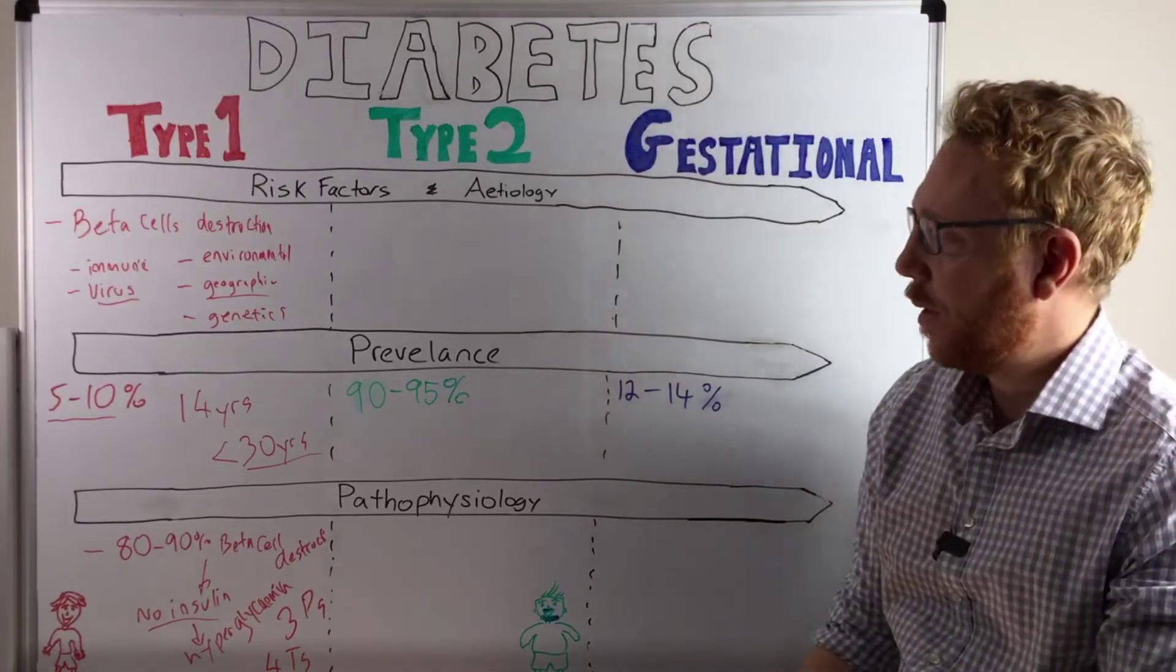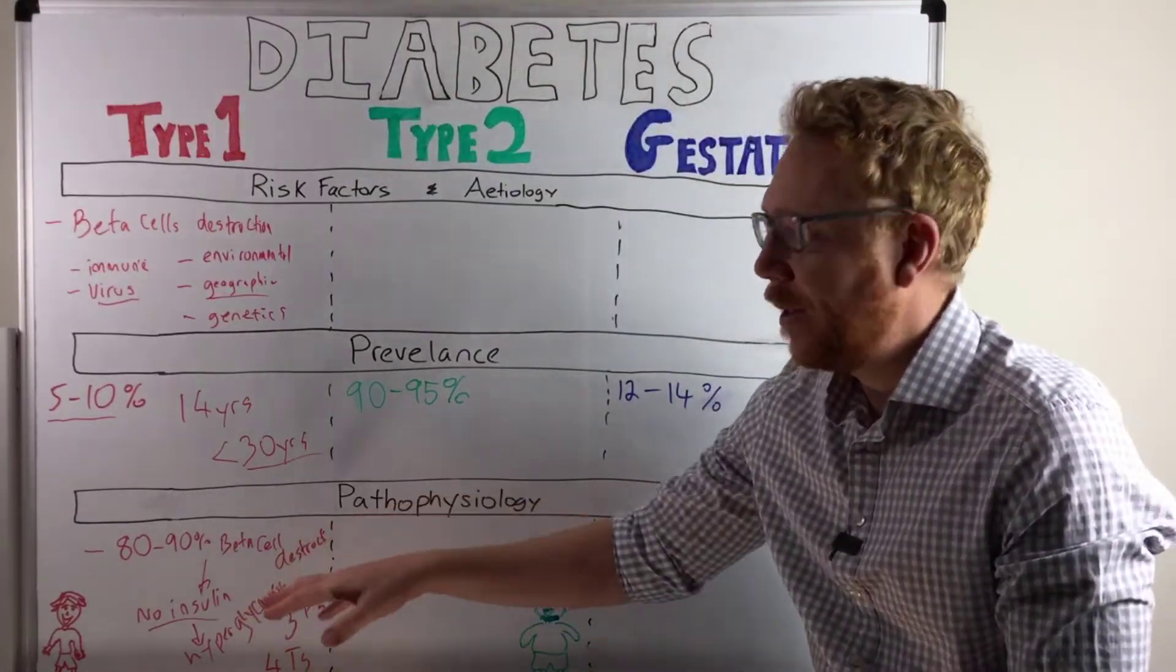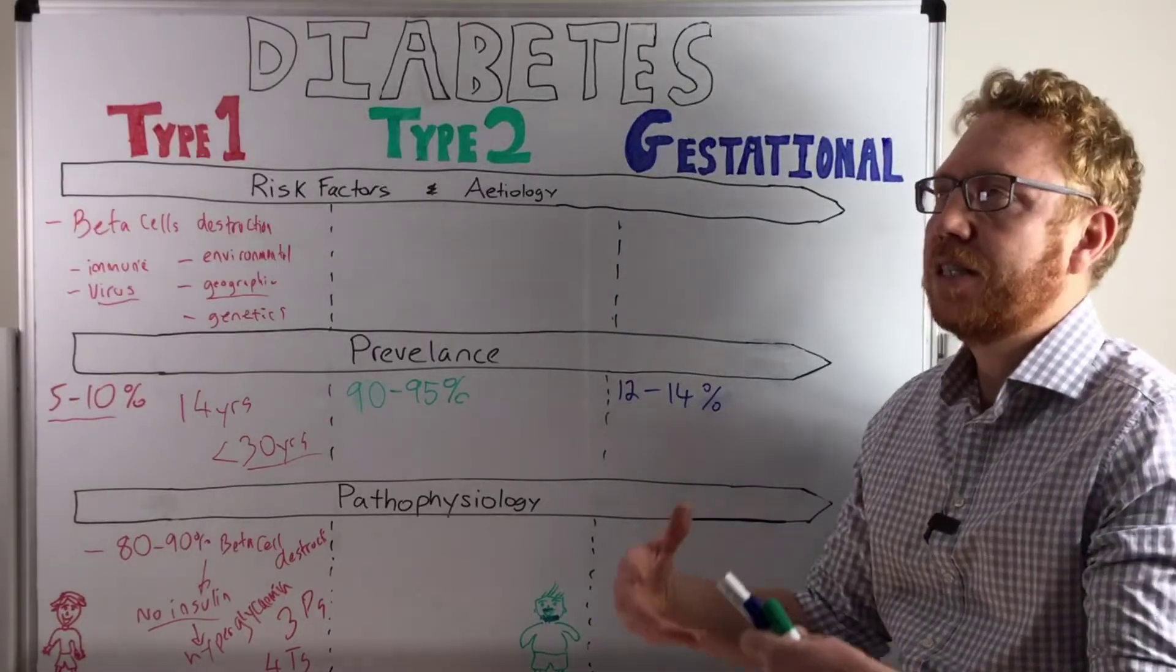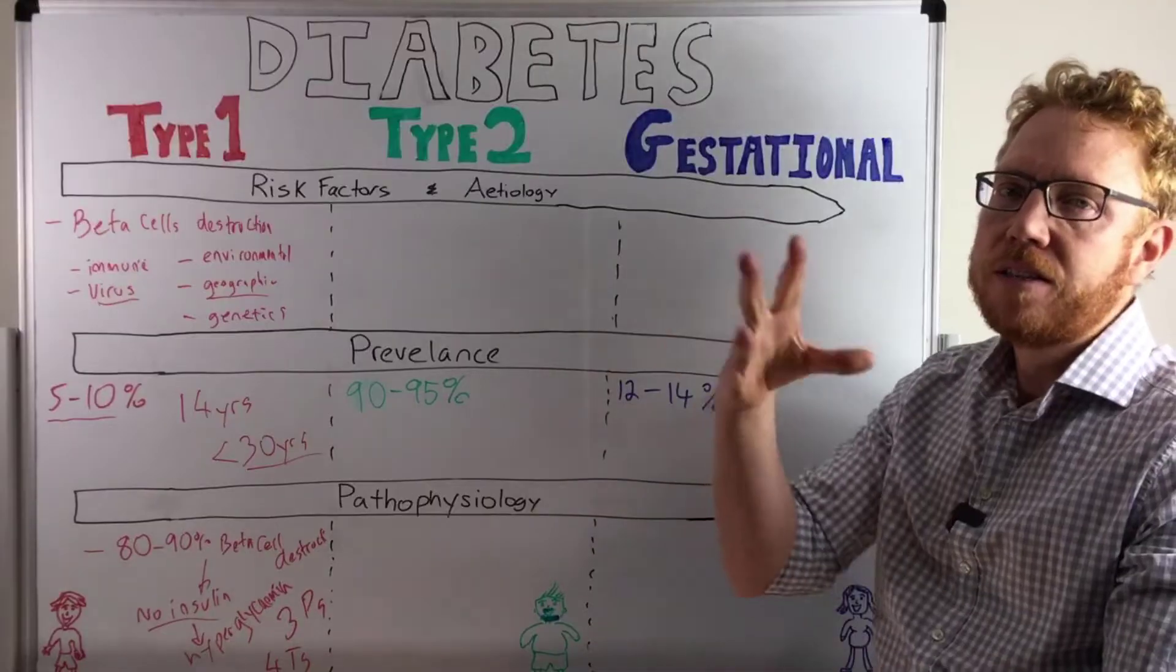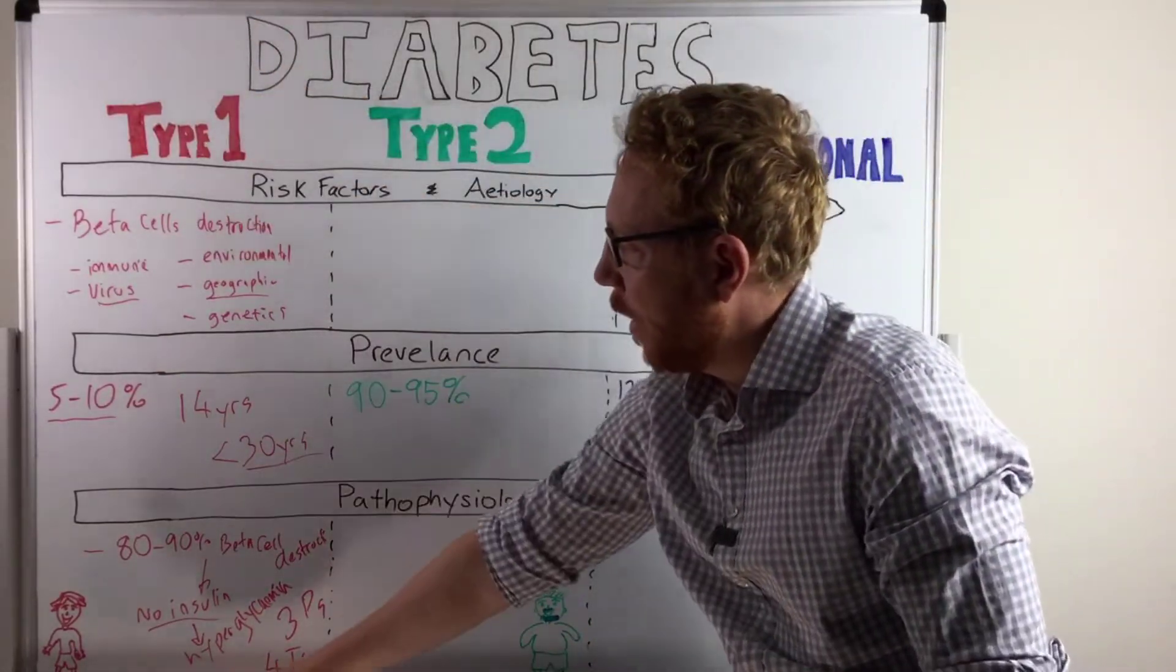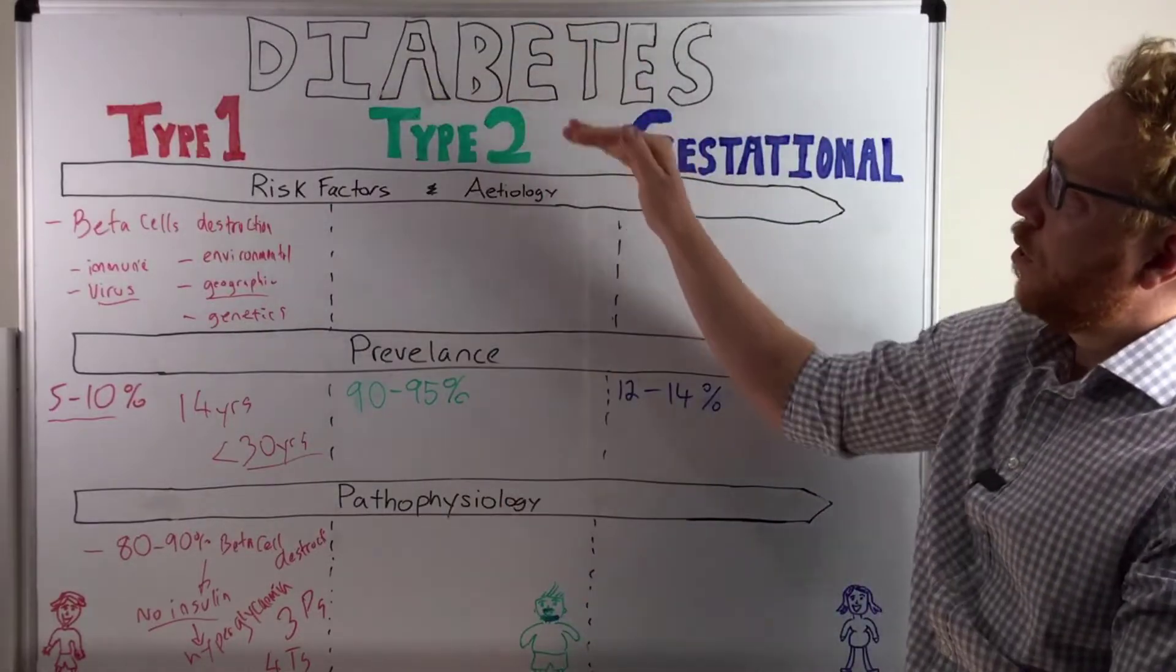Part of the reason why they're losing weight is because they've got no insulin. That means they can't get the glucose into the cells. That means their body seems to think that it's starving, therefore they release a lot of fat, therefore they lose weight. So that's type 1 diabetes.